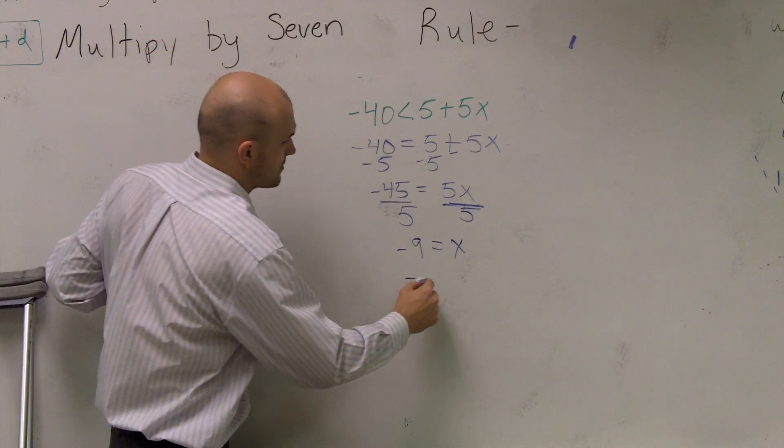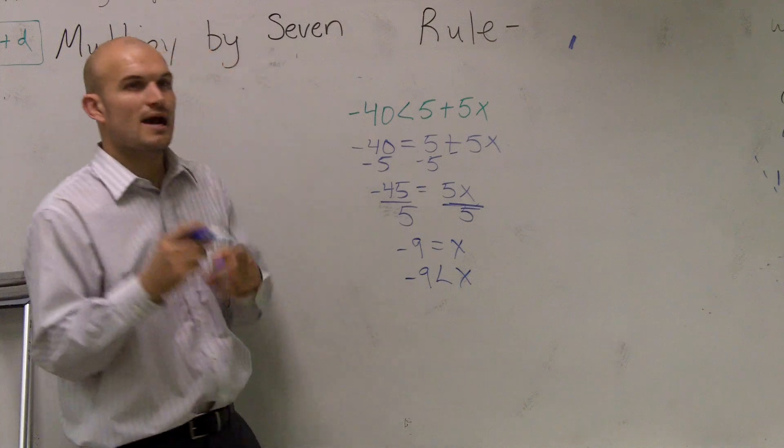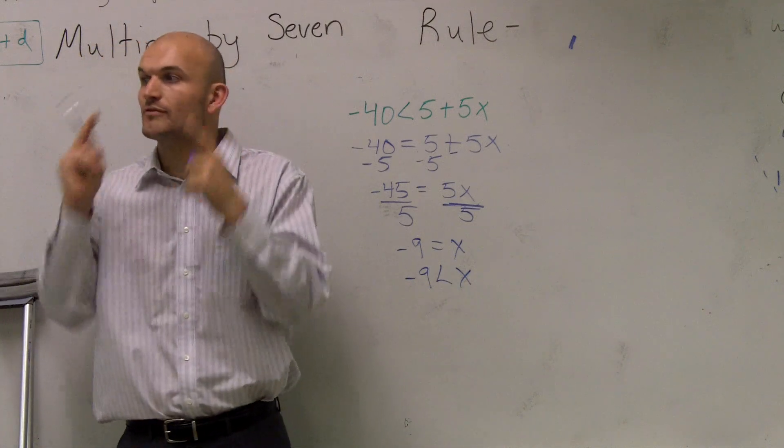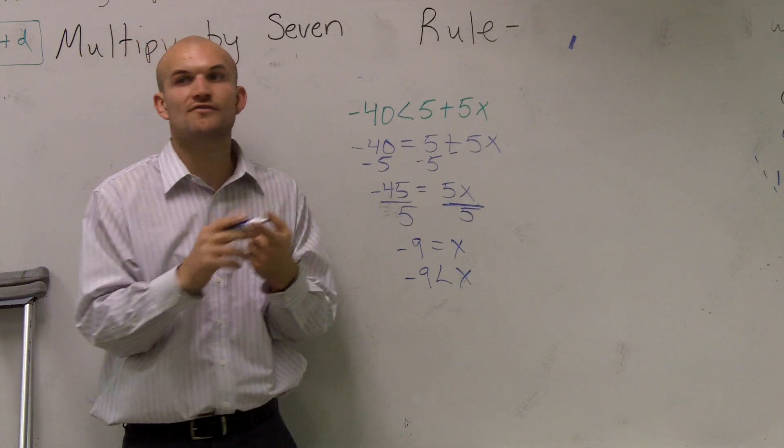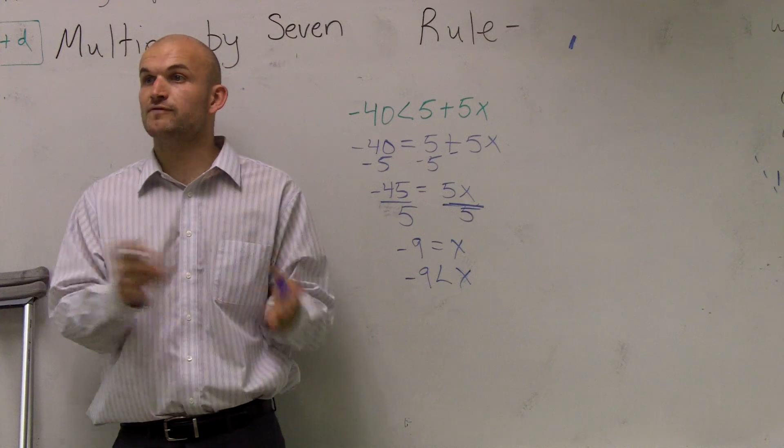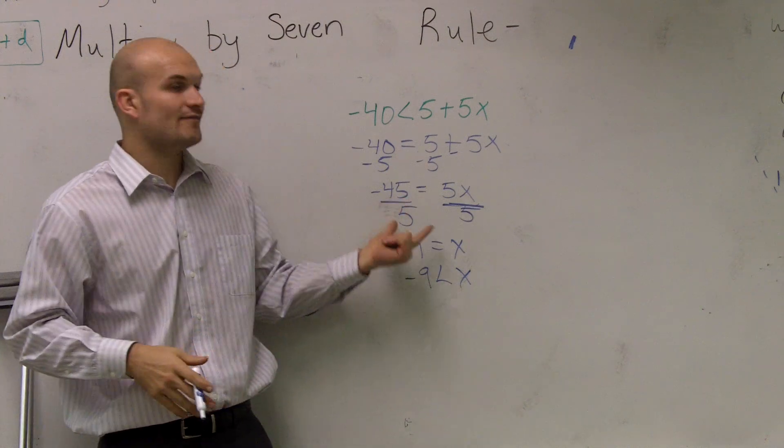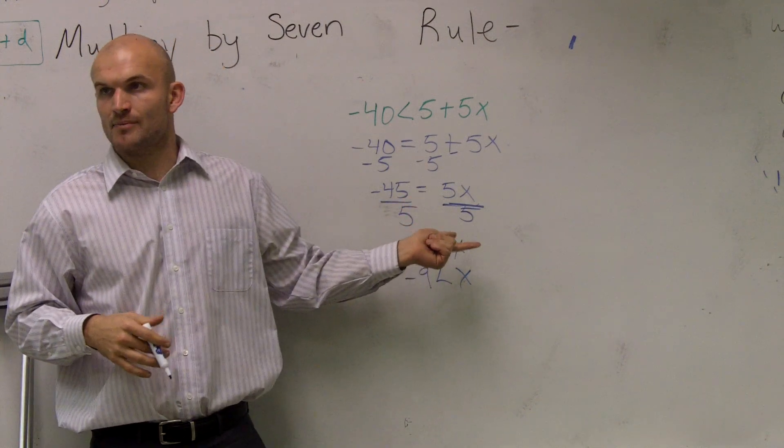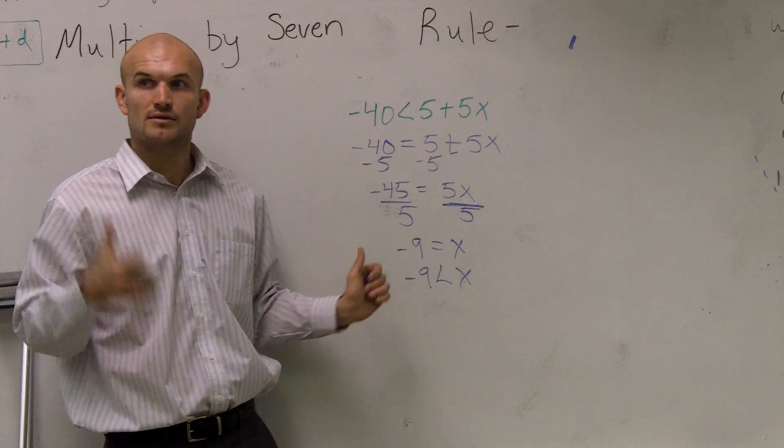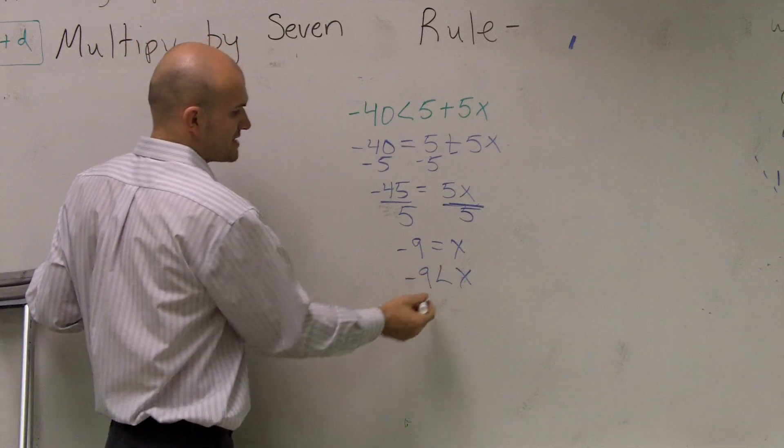Alright? And then, I need to think again to myself. Remember, whenever you multiply or divide by a negative number, you're going to flip the sign. So, did I ever multiply or divide by a negative number? No, my number was positive, right? So, I'm good. So, you're going to put in the same sign.